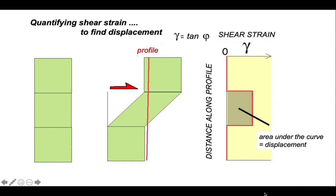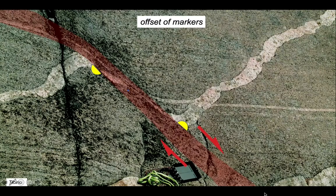Natural shear zones are more complicated. Now let's have a look at how we can quantify shear strain using offset markers. On this outcrop, we've got two markers. We've got the big fat white aplite zone coming across the middle, we've already discussed, and there's another little one in here, which just about crosses the shear zone.